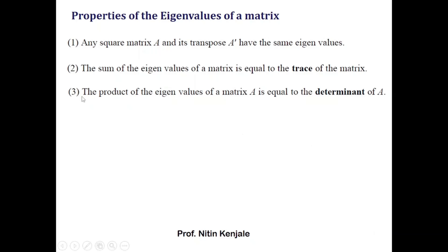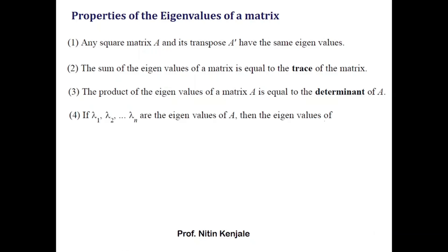You can see that properties two and three can be used for cross-verifying whether the eigenvalues you obtained are correct or wrong. The next property states that if λ₁, λ₂, up to λₙ are the eigenvalues of matrix A, then the eigenvalues of k·A are k·λ₁, k·λ₂, up to k·λₙ, where k is any scalar.